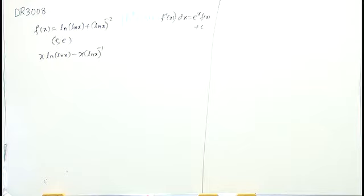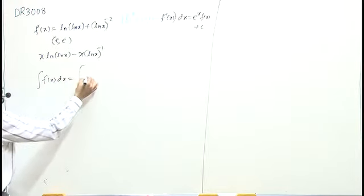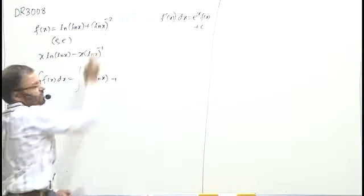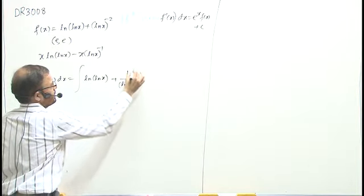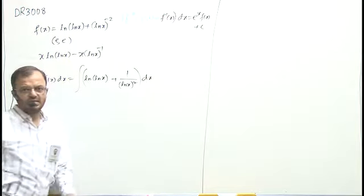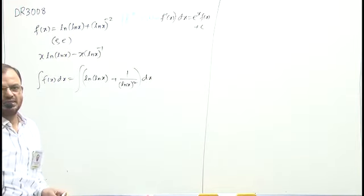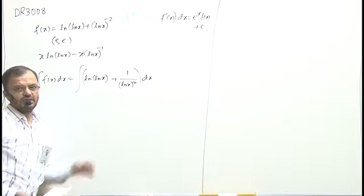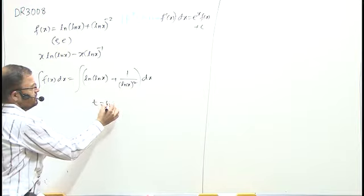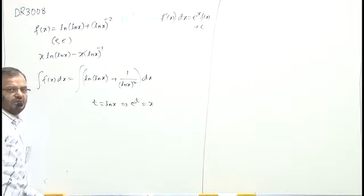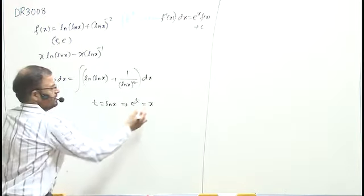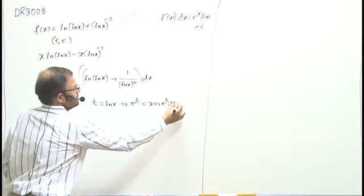Now, antiderivative. The meaning of antiderivative is integral, indefinite integral. So I write here it is integral f of x dx. That is integral of ln of ln x plus here power is minus 2. I can push down, so I will write ln x square. Here we have to write dx.